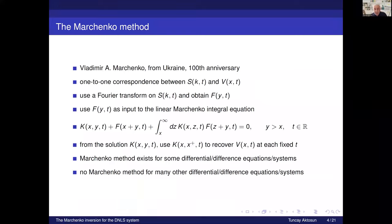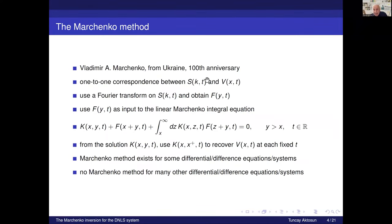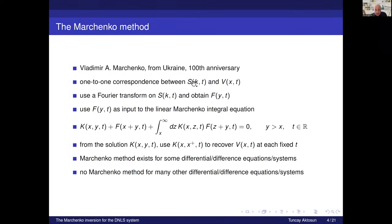Here's the summary of the Marchenko method. Marchenko is now 100 years old — a great mathematician from Ukraine. The last time I heard, he's safe, having been moved from Kharkiv to a nearby city. If you can establish a one-to-one correspondence between the potential and the scattering matrix, you can solve the inverse scattering problem. Marchenko in 1950 established a method to obtain the potential from the scattering data by establishing an integral equation, which he called the fundamental equation, now known as the Marchenko integral equation.